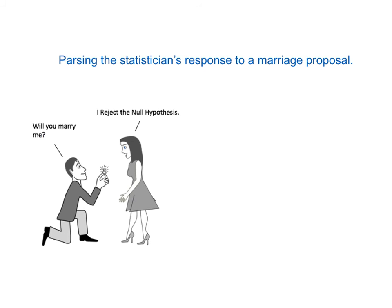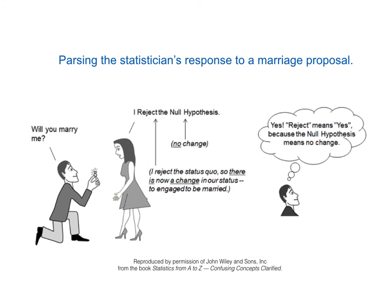Going back to the marriage proposal scenario: she is rejecting the null hypothesis. The null hypothesis would be that she wants there to be no difference, no change, or no effect as a result of his proposal. Prior to her response, this couple was not engaged. If she wanted no change in that status, she would fail to reject the null hypothesis. But she does reject it, so there is a difference — their new status is engaged to be married.